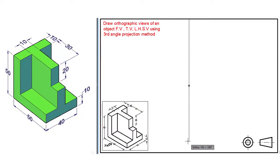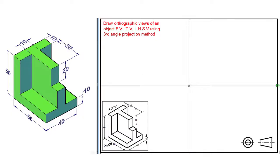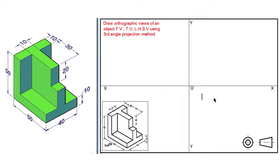With the help of a roller scale, draw a vertical line and a horizontal line. Name the endpoints of the horizontal line as point XX and the endpoints of the vertical line as point YY. Also name the intersecting point as point O, as shown.